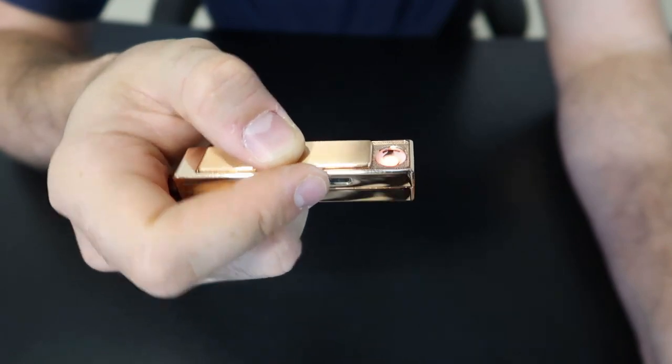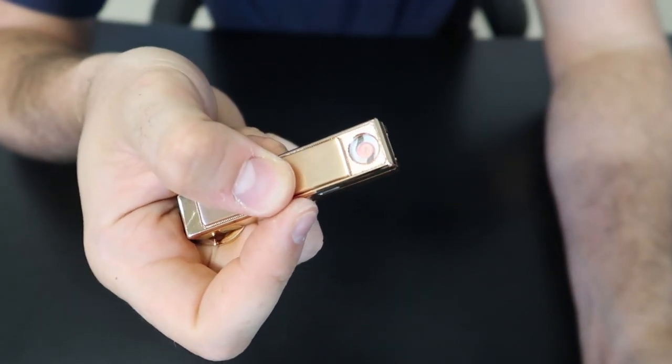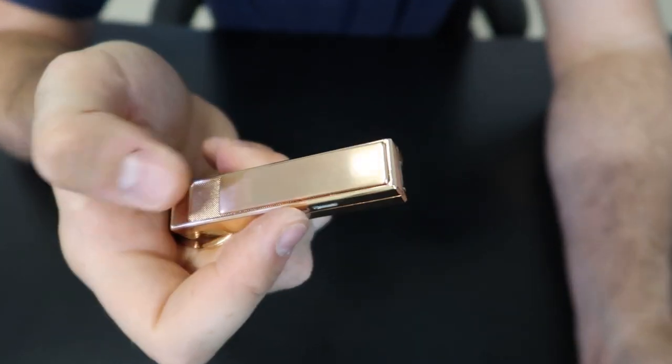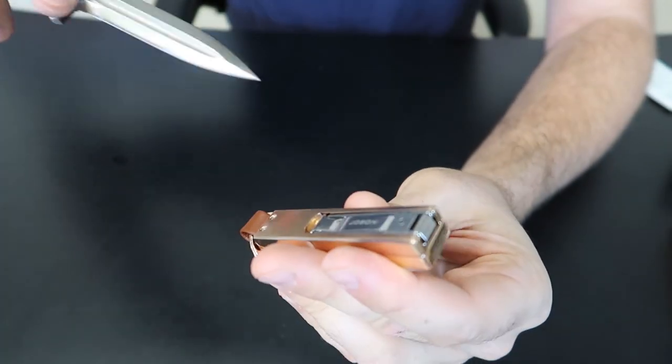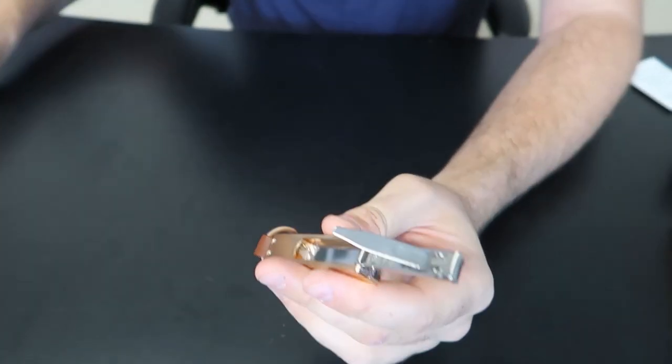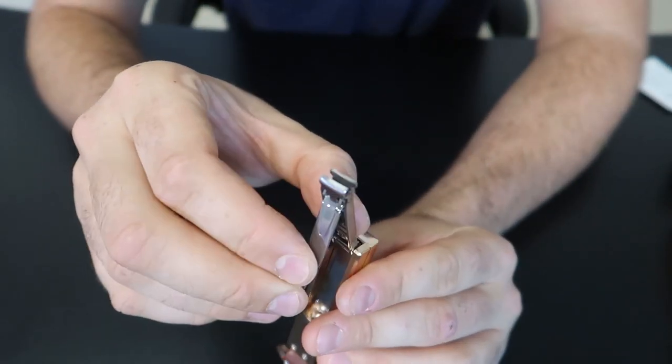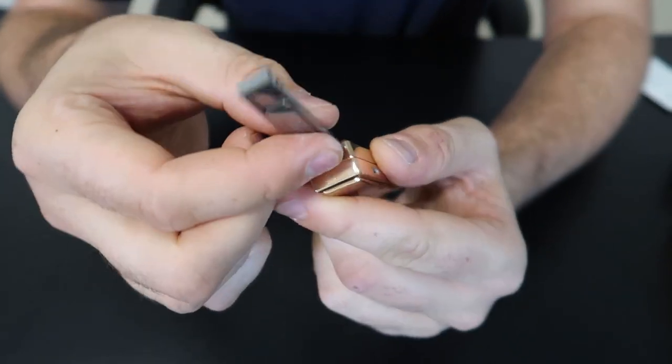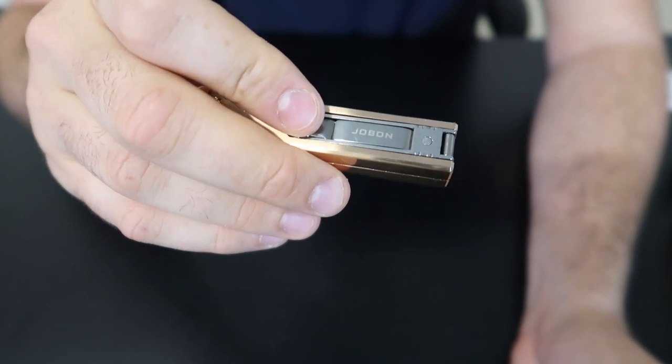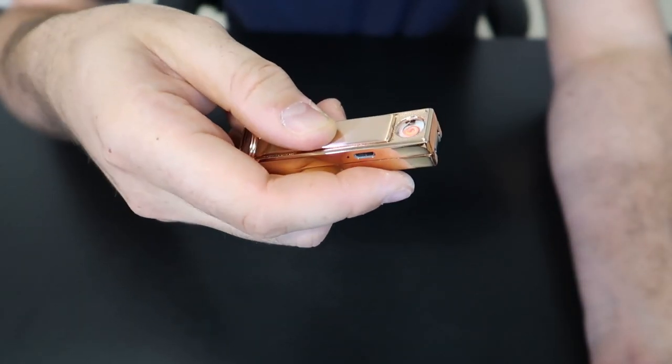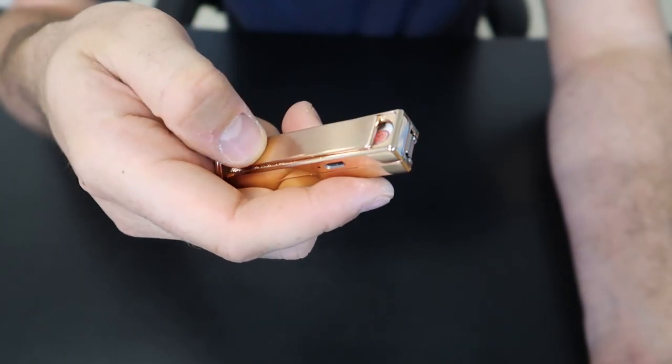You can still start the fire by putting a little piece of napkin or leaf, whatever. But to open this up, I kind of don't have nails so you got to flip this out, and you have here a little nail clipper. In case you love clipping your nails, you can always have it on your keychain with the lighter.